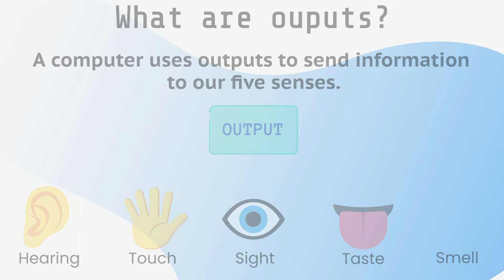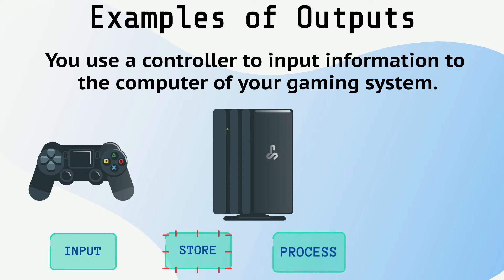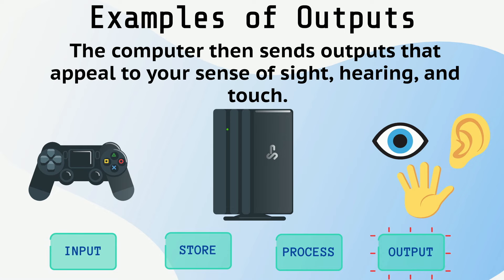For example, when you are playing a video game, you use a controller to input information to the computer of your gaming system. The computer then sends outputs that appeal to your sense of sight, hearing, and touch if it vibrates.